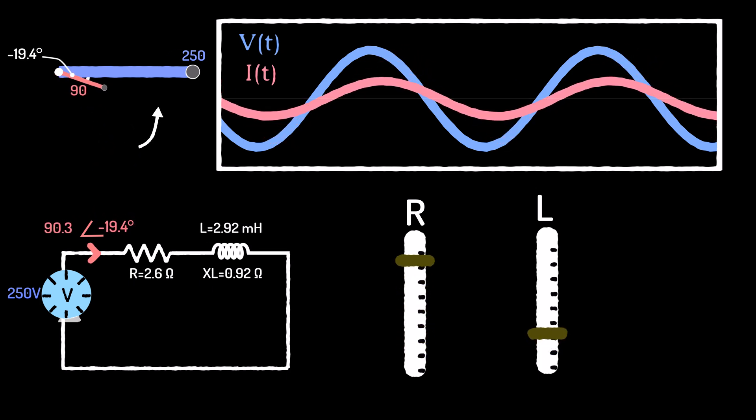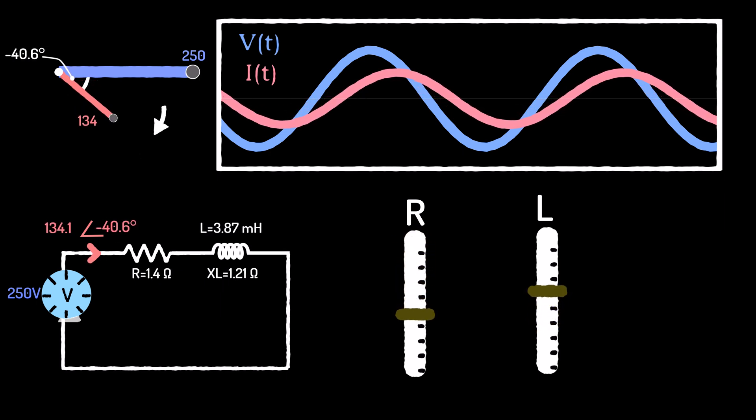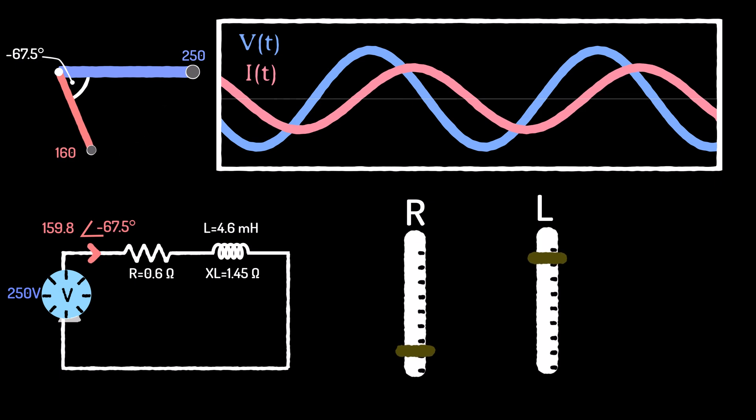When the resistance is high compared to the inductive reactance, the phase of the current is small. When the inductive reactance is high compared to the resistance, the phase is larger.